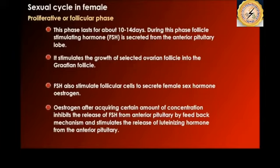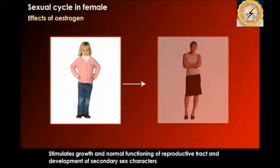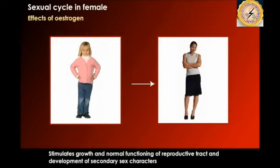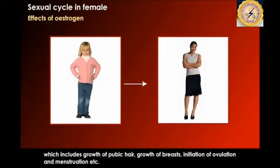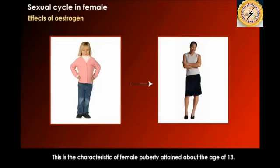Once estrogen reaches a certain concentration, it inhibits the further release of FSH from the anterior pituitary by a feedback mechanism, and stimulates the release of luteinizing hormone (LH) from the anterior pituitary. Estrogen stimulates the growth and normal functioning of the reproductive tract and helps in the development of secondary sexual characteristics, including pubic hair growth, breast development, initiation of ovulation, and the menstrual cycle — characteristics of female puberty attained around age 13.